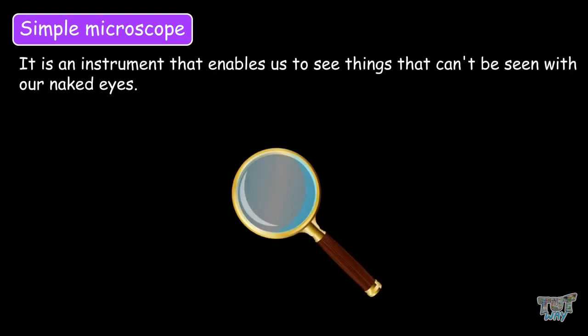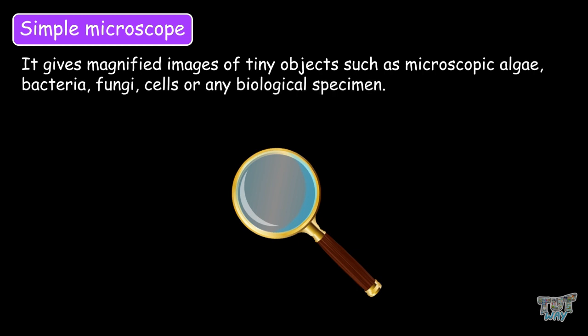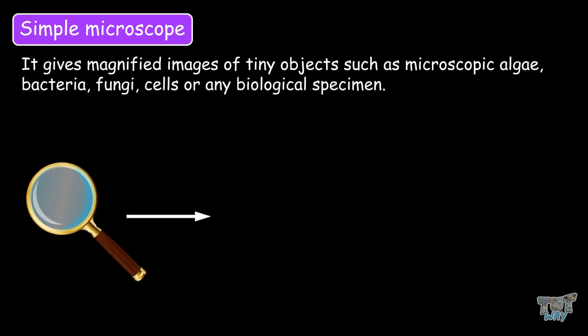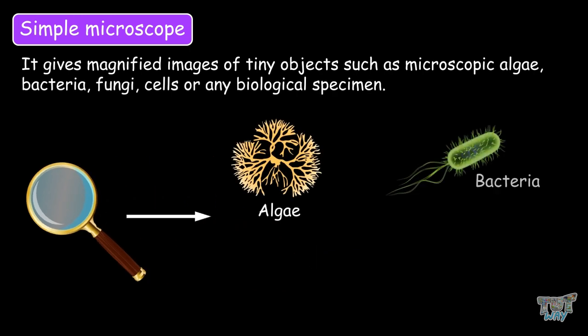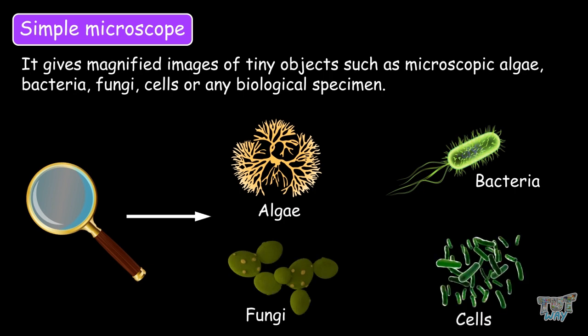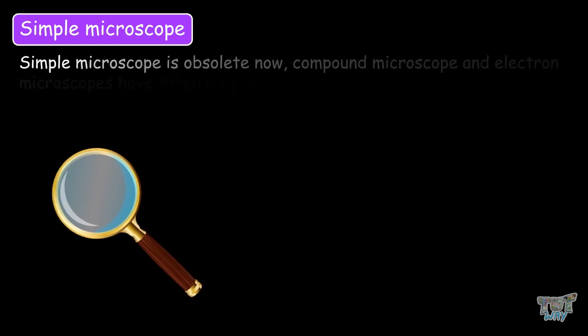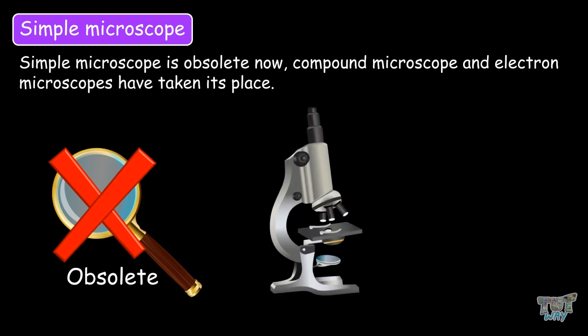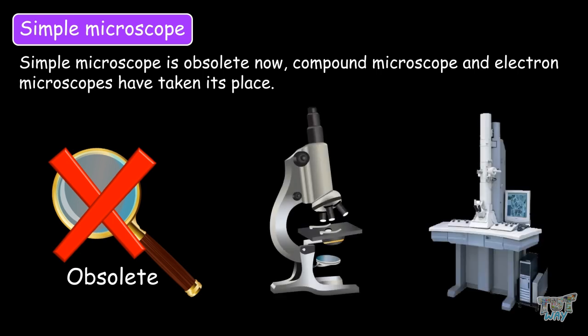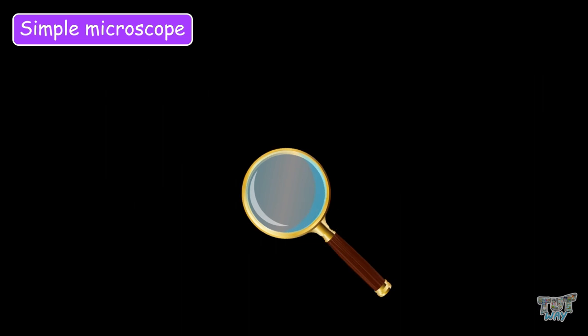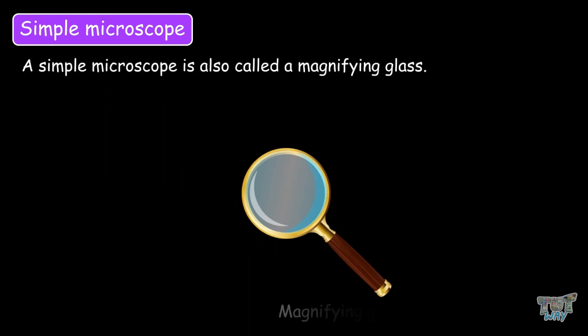Simple microscope. This is an instrument that enables us to see things that cannot be seen with our naked eyes. It gives a magnified image of tiny objects, such as microscopic algae, bacteria, fungi, cells, or any biological specimen. It only has one lens for magnification. The simple microscope is obsolete now. The compound microscope and electron microscopes have taken its place. A simple microscope is called a magnifying glass.